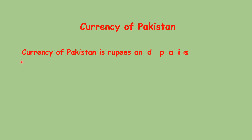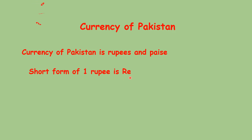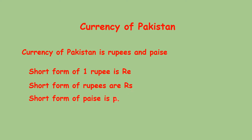Students, do you know different types of currencies are used in different countries? Like dollar is used in USA, riyal is used in Oman and UAE. In Pakistan, the currency is rupees and paise. Remember, the short form of one rupee is RE, for rupees we use RS, and for paise we use the small letter P.